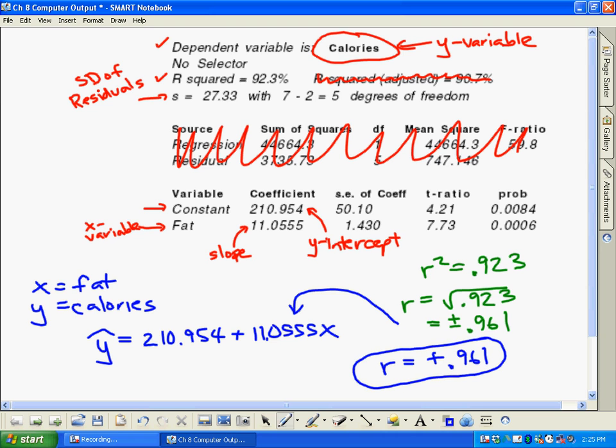So that's how computer output works - it's really simple if you can read it. All the information is there except for r - you just got to work a little bit for that. And there it is.